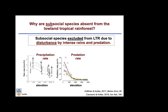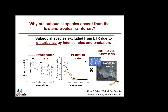The two patterns we wish to explain are: why are sub-social species absent from the lowland tropical rainforests? Our hypothesis is that it is the disturbance caused by intense rains and predation that excludes them. We have documented that the intensity of rain and the rate of predation both decline with elevation. This is relevant because spiders in the genera that gave rise to social species build dense three-dimensional webs that are presumably costly.